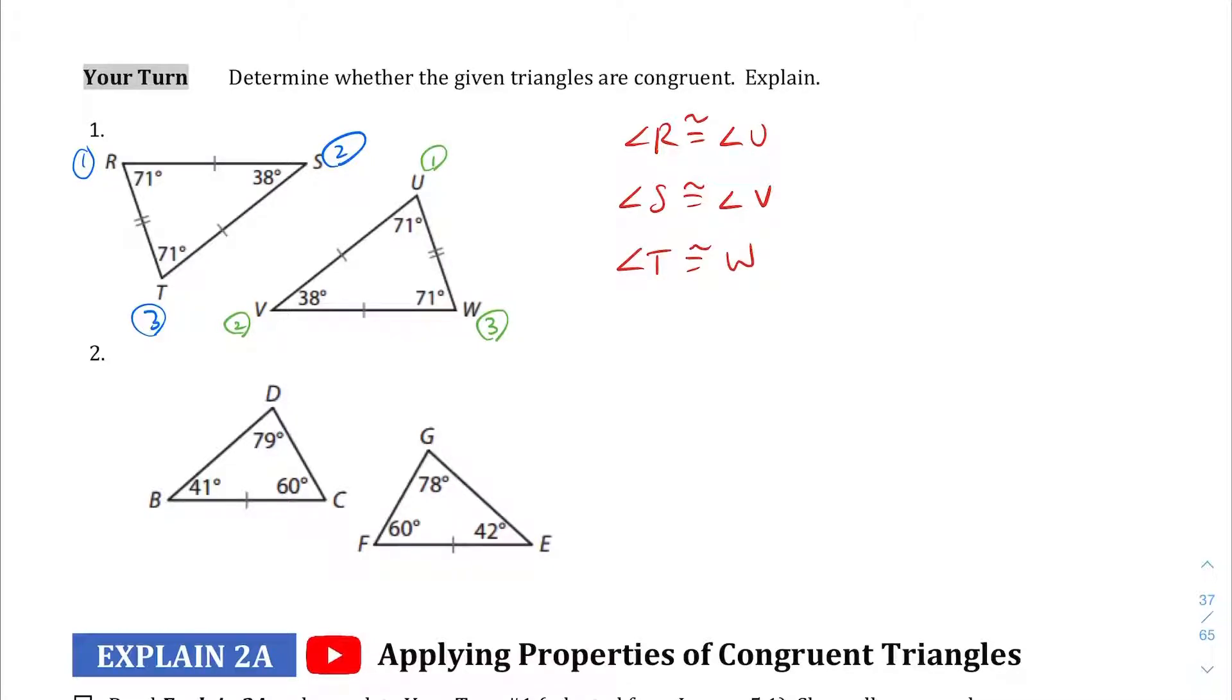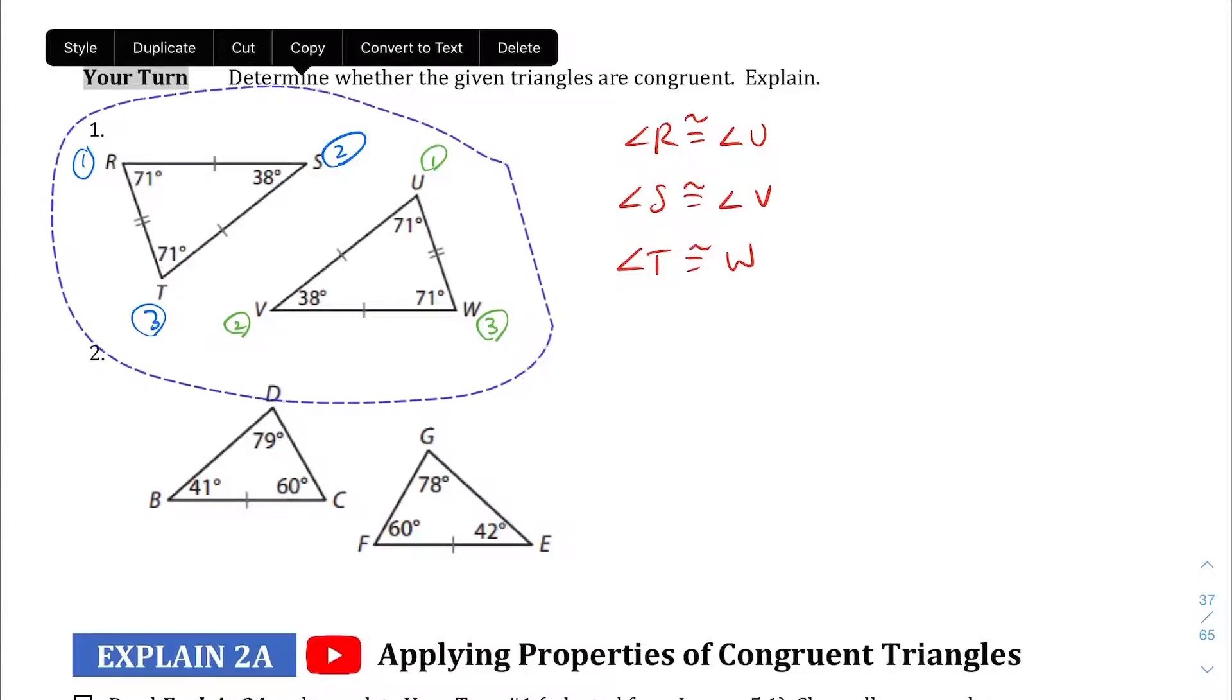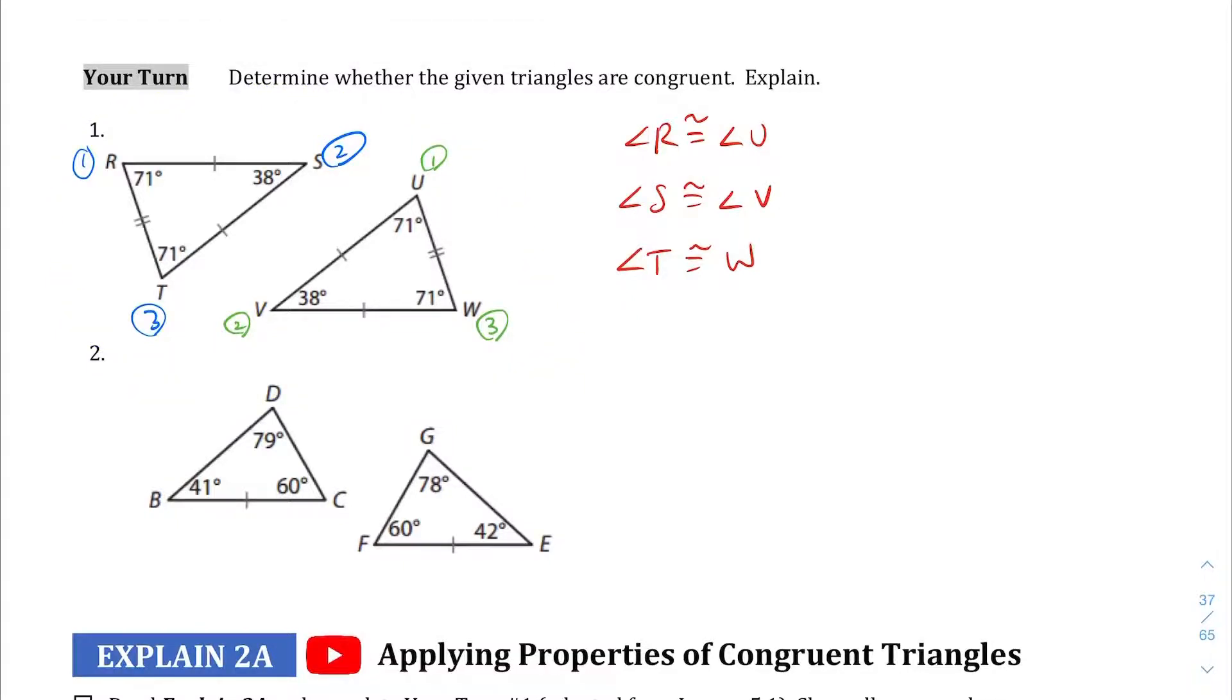The sides are going to be congruent as well. Now that we've gotten those out of the way, let's keep the numbers and change the color. From one to two, we're going to call this side A. From two to three is going to be side B. And from three back to one is going to be side C.